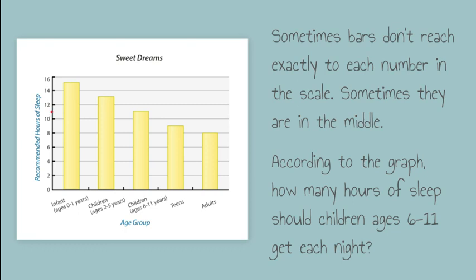This is where I have to think about my interval on the scale. I can see it goes 0, 2, 4, 6, 8, 10, 12, 14, 16 — so it looks like it's going up by twos. So if my bar is right in the middle between 10 and 12, the number that's right in the middle there is 11.